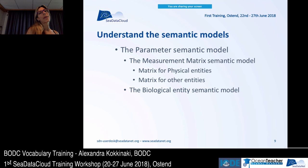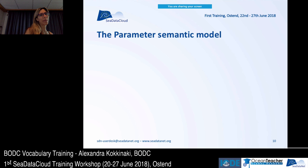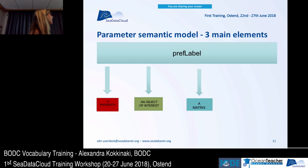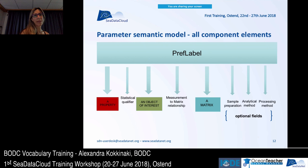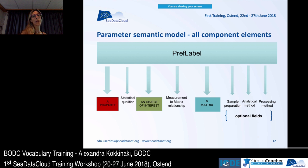The first semantic model we will explain is the P01 parameter semantic model. It has a title with three parts: a property, an object of interest, and a matrix. It can be enhanced by a statistical qualifier, a measurement-to-matrix relationship, and optional fields related to the analytical and processing method.